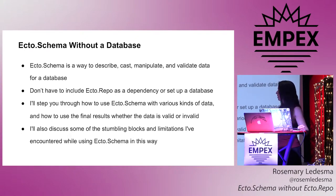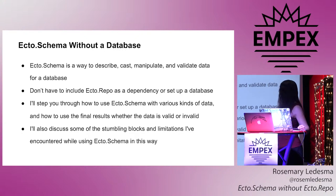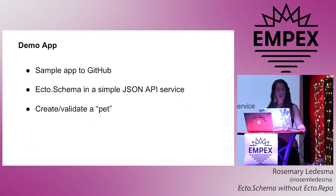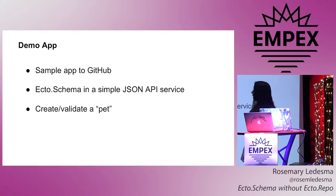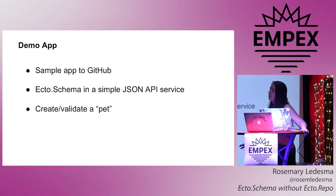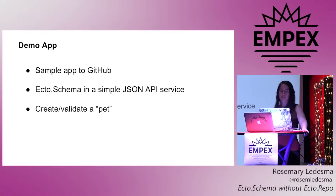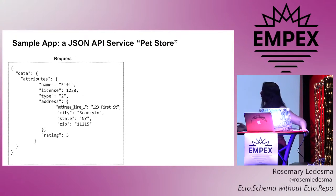I'm going to show you how you can do that, what to do with the results you get from inputting some data into Ecto schema, and talk about some of the problems I encountered when using it this way. In order to demonstrate this, I've written an app on GitHub and I'll give you the link. It's a really simple JSON API service, and all you can do with it is create a pet object.